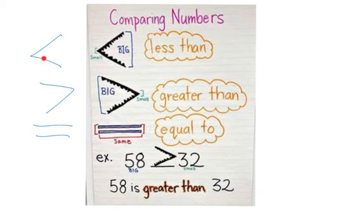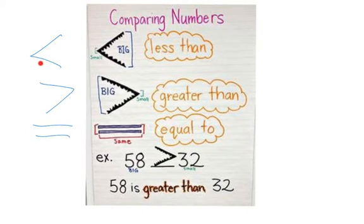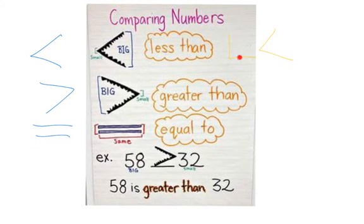The less than symbol means the smaller number is on the left, because it's the smaller side of the symbol, and the bigger number is on the right. You can also think of it as this one eats the bigger number too. A helpful trick: if you have an L and you scrunch it up a little, that creates a less than symbol — so the L from 'less than' helps you remember.